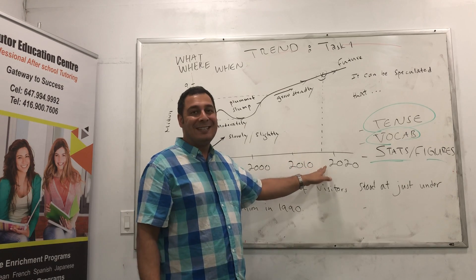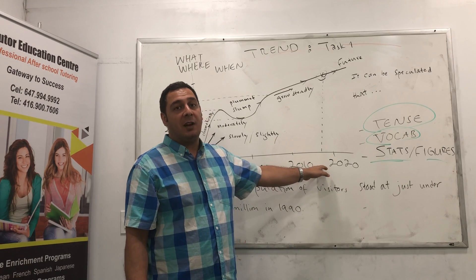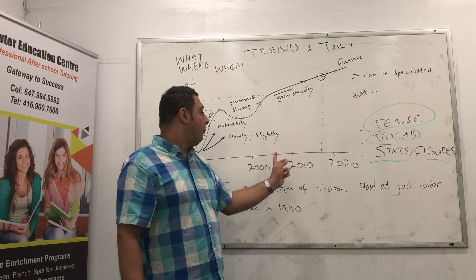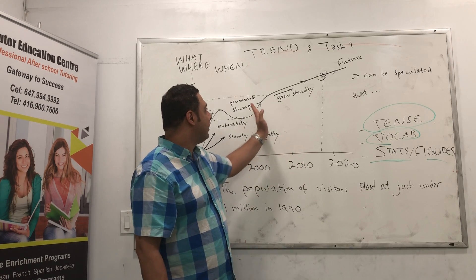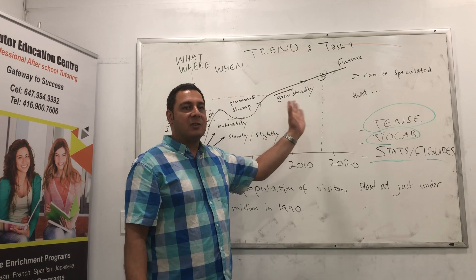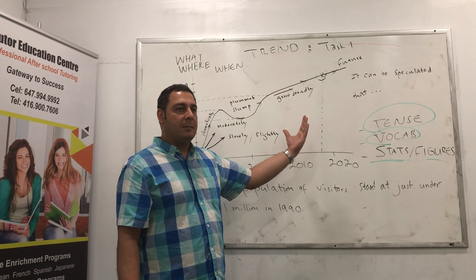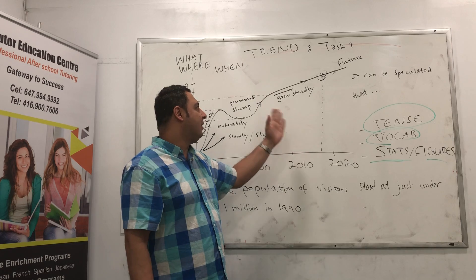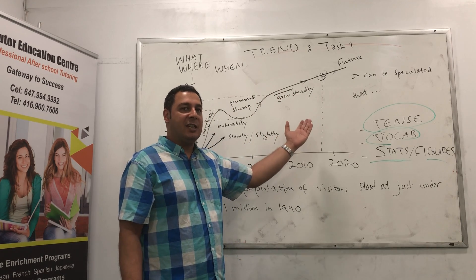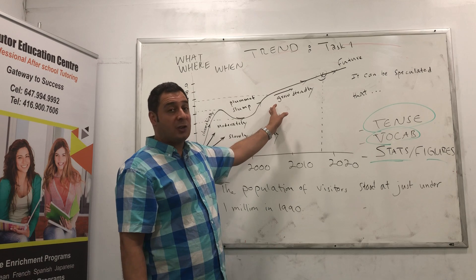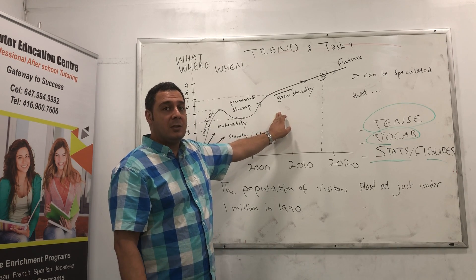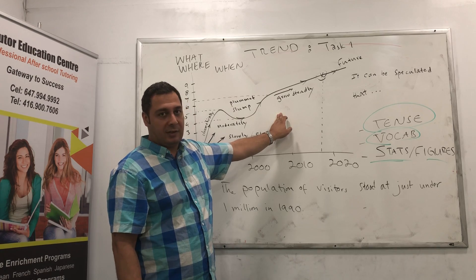If we're going to talk about a trend that begins in the past and continues until today, you have to be careful because you might want to use present perfect tense. For example, when a trend starts and continues until today — say the year 2018 — you need to express that in present perfect tense.